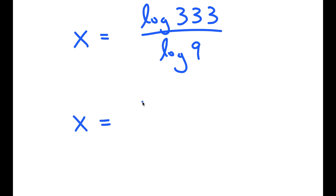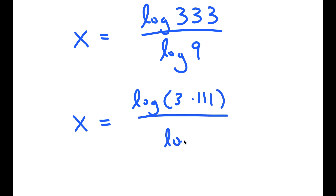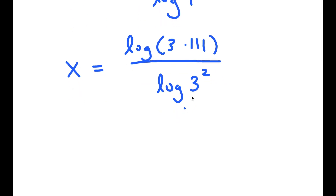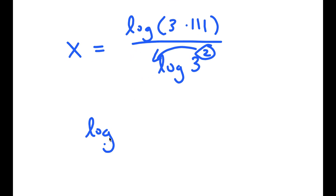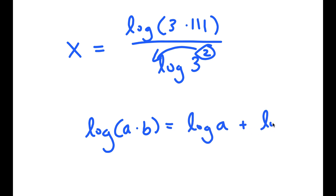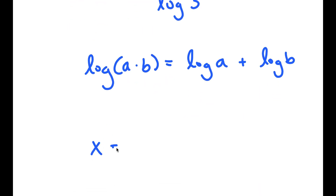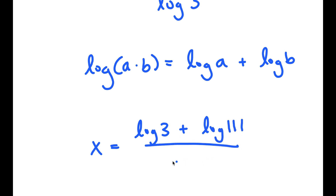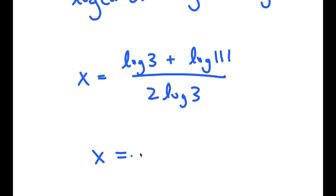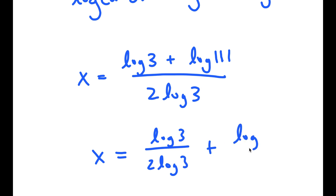Now I can rewrite log of 333 as log of 3 times 111, and I can rewrite log of 9 as log of 3 squared. We know that if I have log a to the power of b, I can move b to the front. Another property of logarithms is that log a times b equals log a plus log b. So I get x is equal to log 3 plus log 111 over 2 times log 3, which equals log 3 over 2 times log 3 plus log 111 over 2 times log 3.